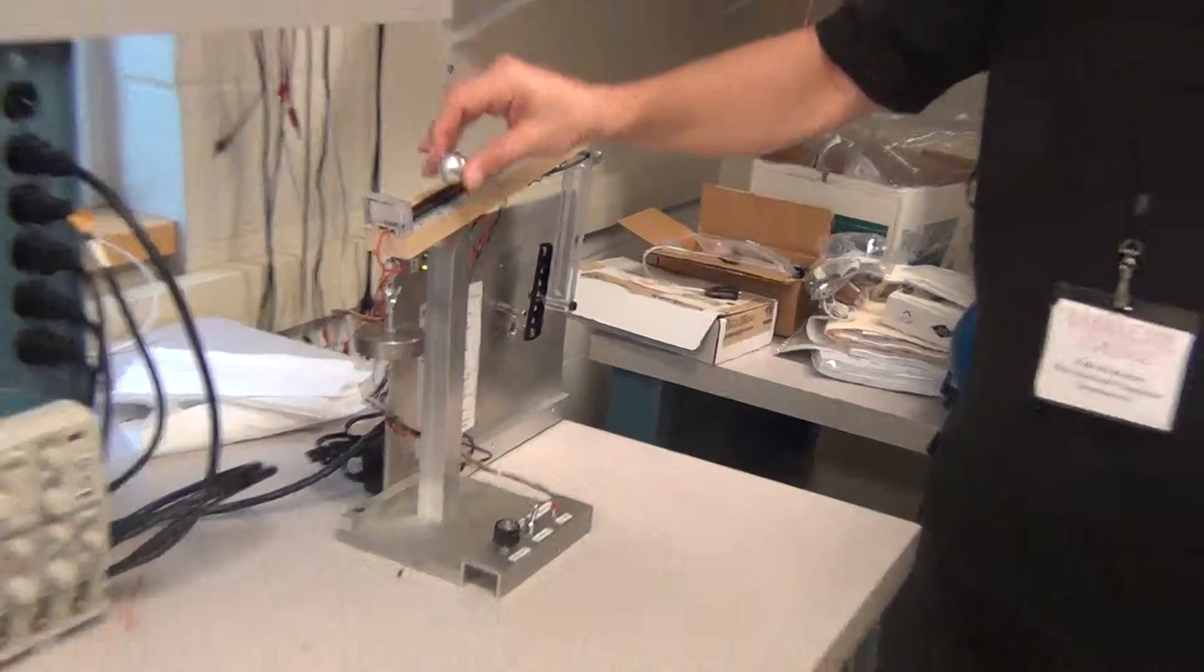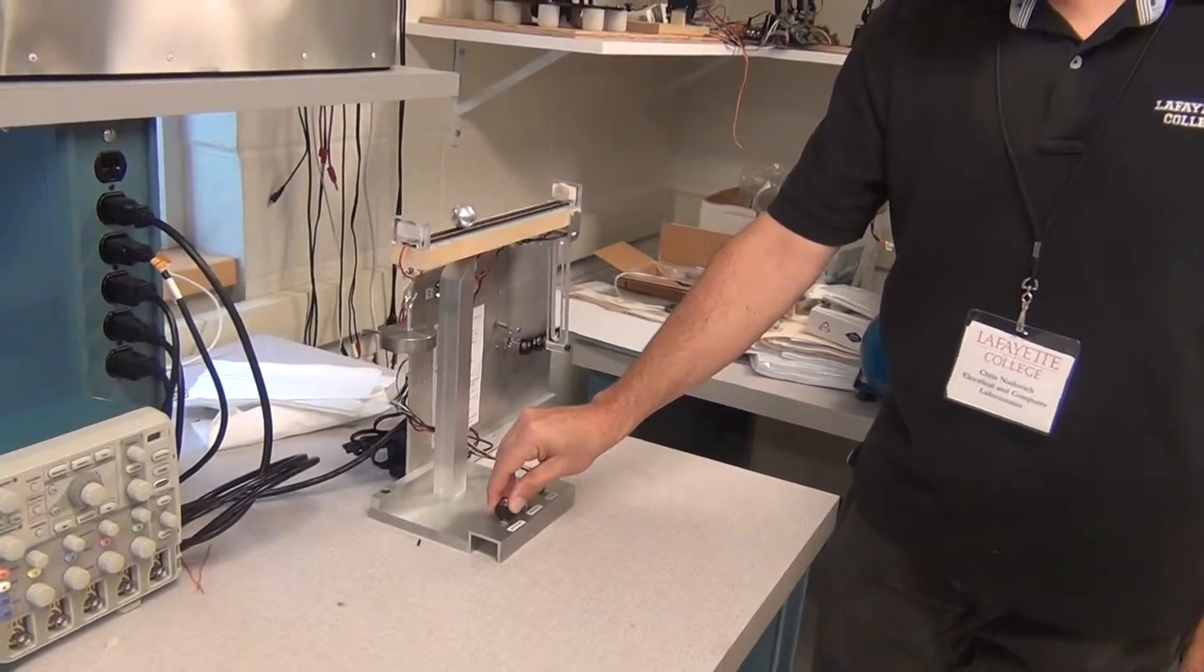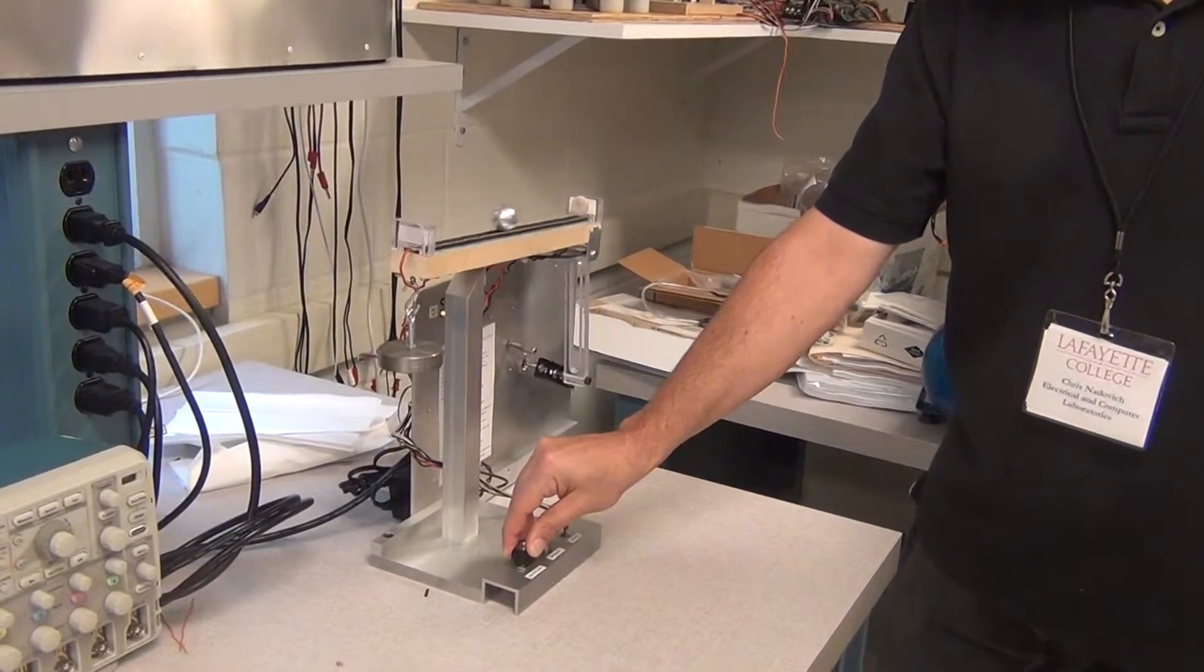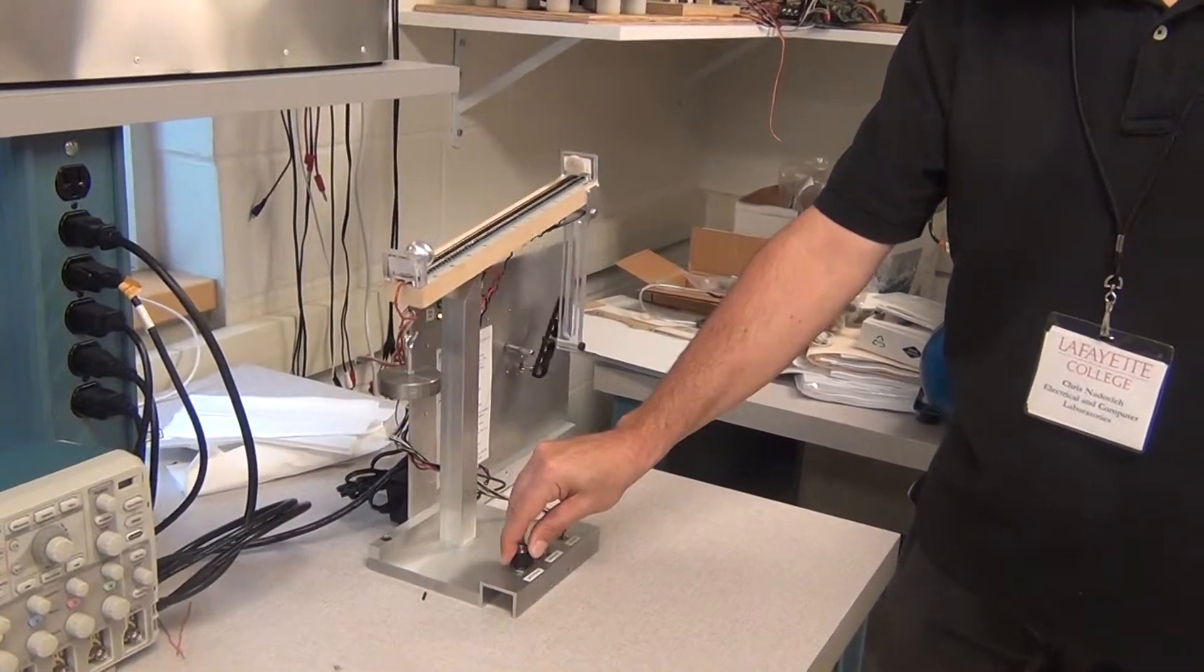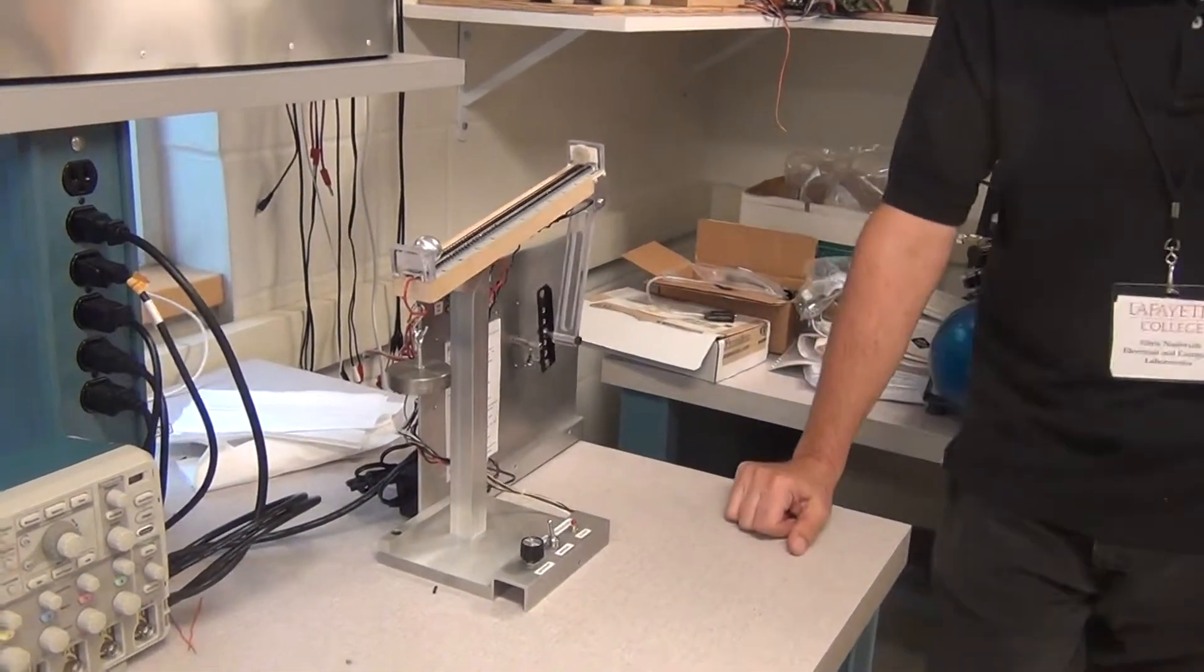So, but I'm going to put this ball on the track, and the idea of this thing is to try to balance the ball on the track. It's really, really kind of difficult to do manually. But if I put it in automatic mode, let's see if it works.